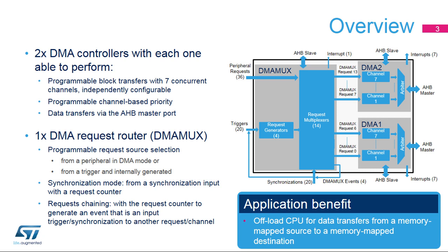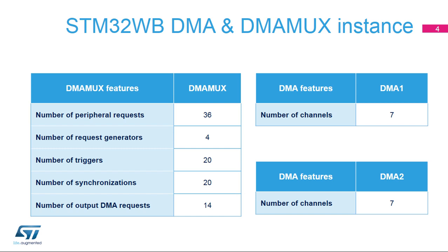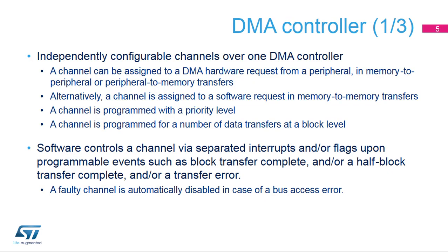Synchronization Mode from a synchronization input or hardware event with a DMA MUX request counter. Request Chaining with the DMA MUX request counter to generate an event that is an input trigger or synchronization to another request or channel. There are 36 peripheral requests, 4 DMA MUX request generators, 20 triggers and synchronization inputs, and 14 DMA channels or requests.